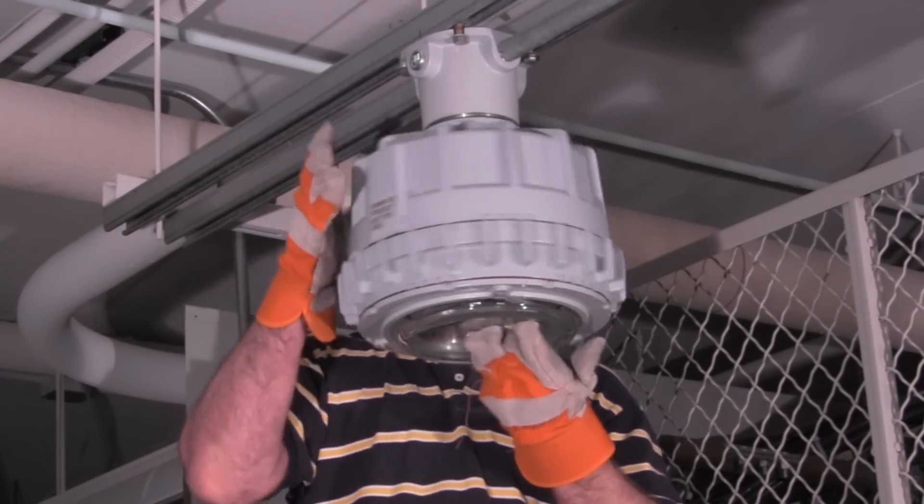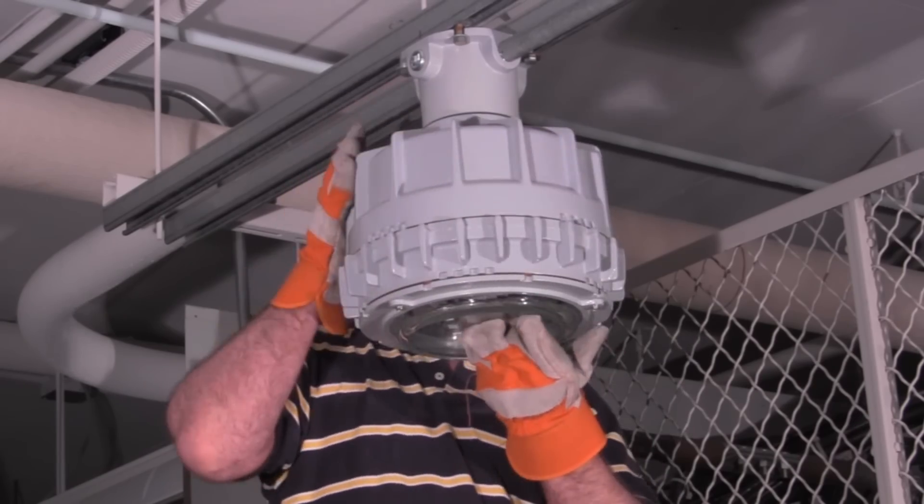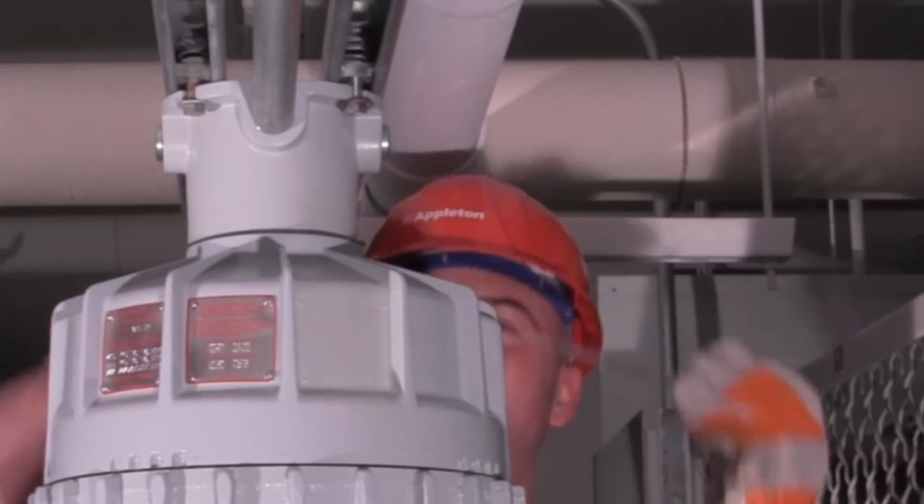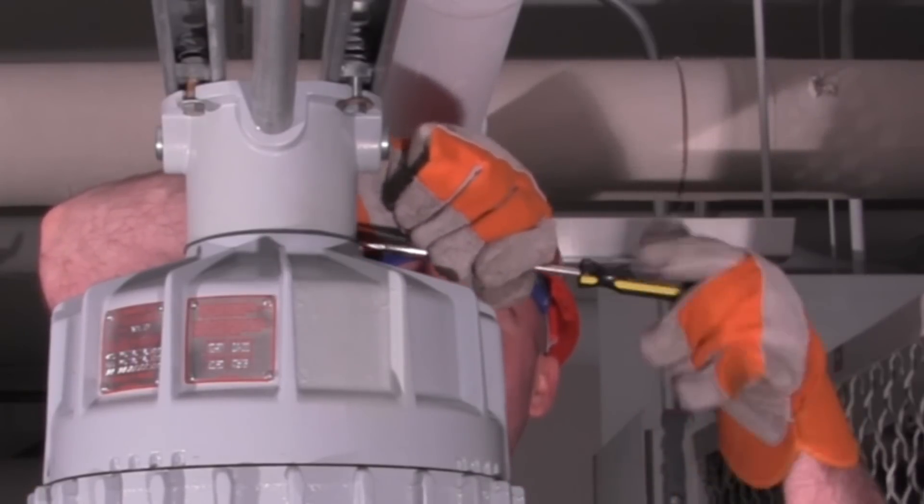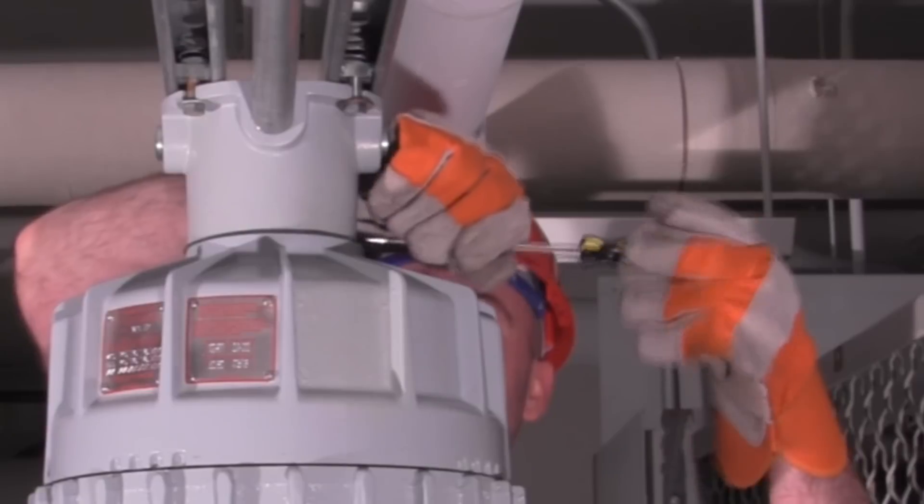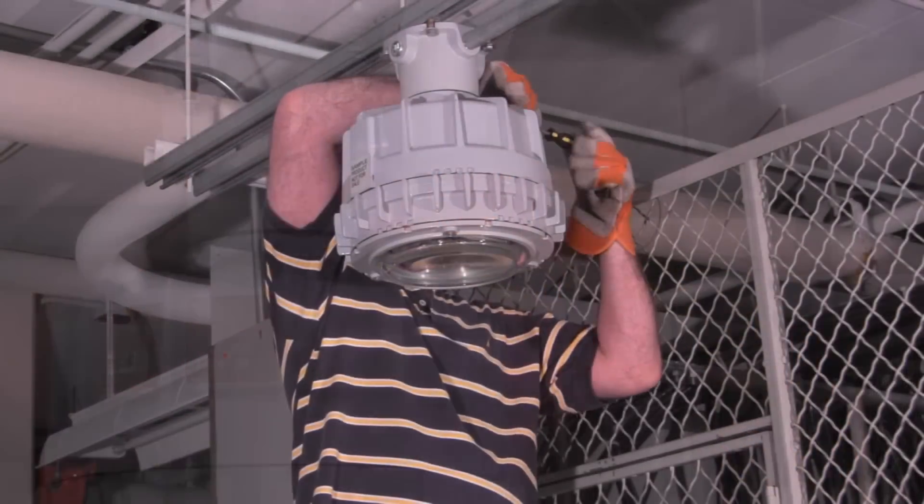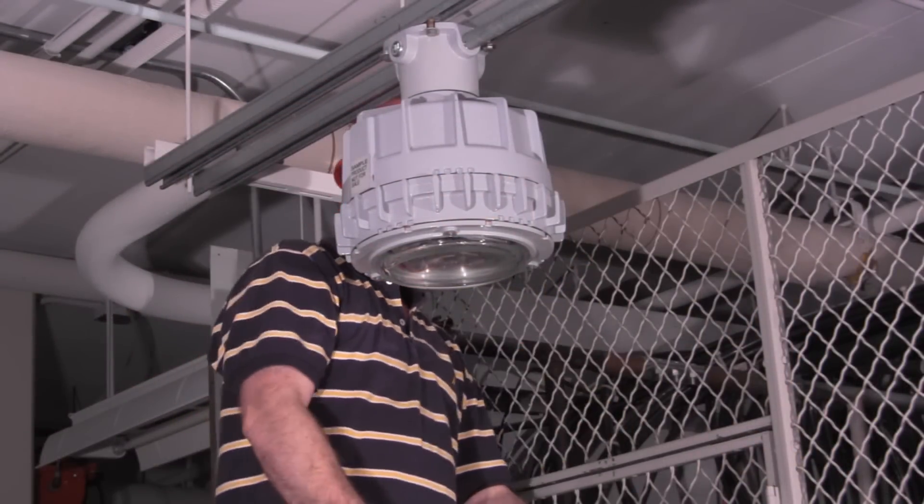Ensure that the fixture is threaded securely. Then tighten the locking set screw on the existing mounting hood. Once the new fixture is properly threaded and seated in the mounting hood, electrical contact will automatically engage. Therefore, there is no need to rewire to change Codemaster lighting fixtures.